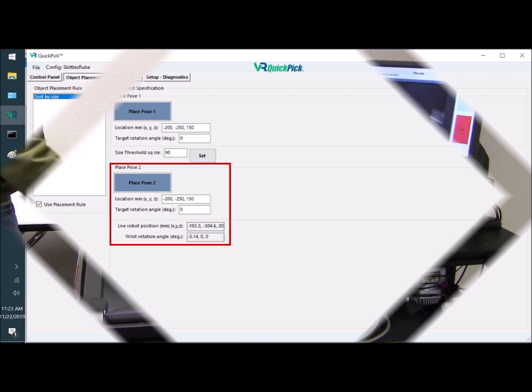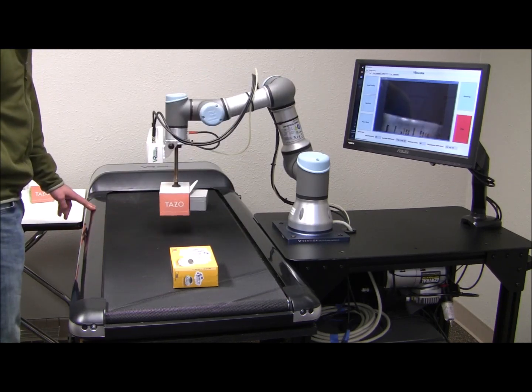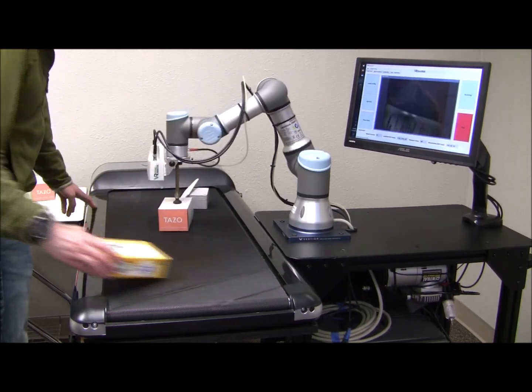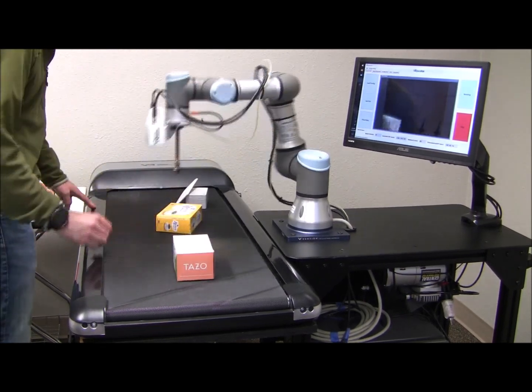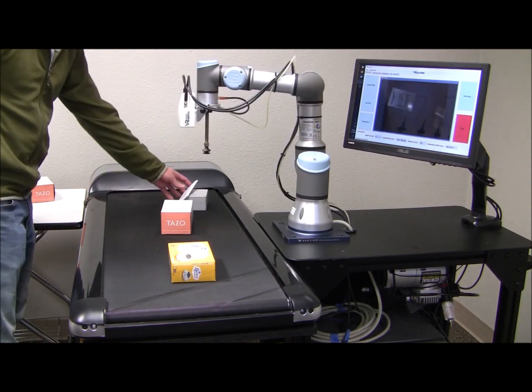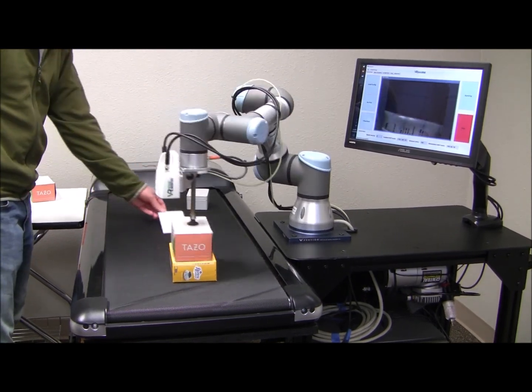Let's watch the system sort by size. As a simple demonstration, the operator is placing random size boxes in the pick area. The system calculates their sizes and then decides whether to put them in Place Location 1 or Place Location 2. There was no need to teach the parts as other systems require.